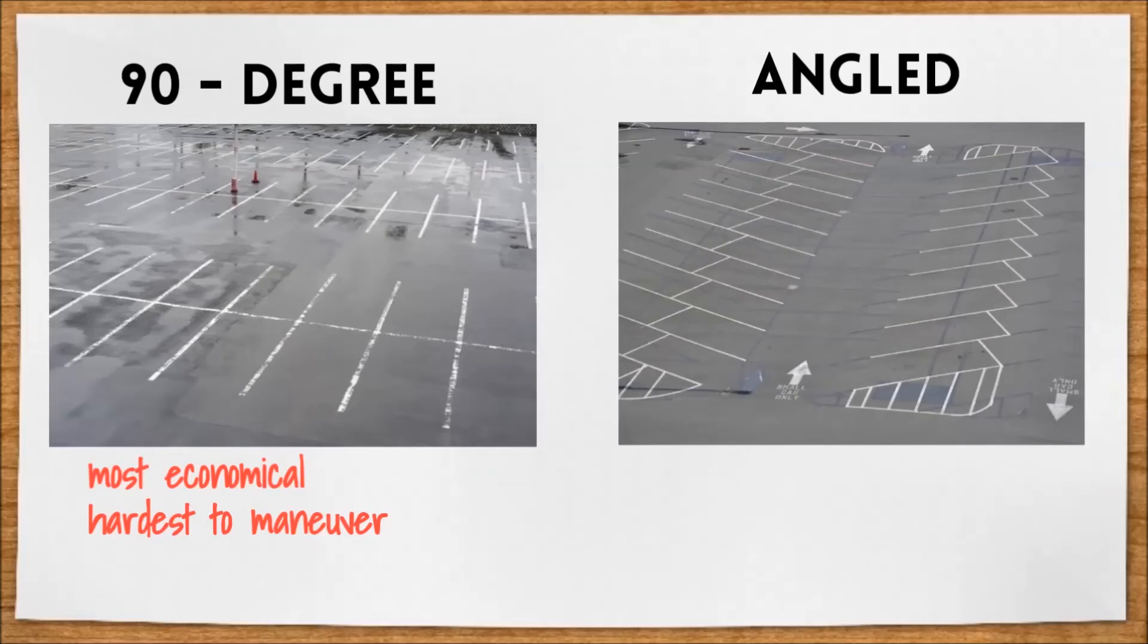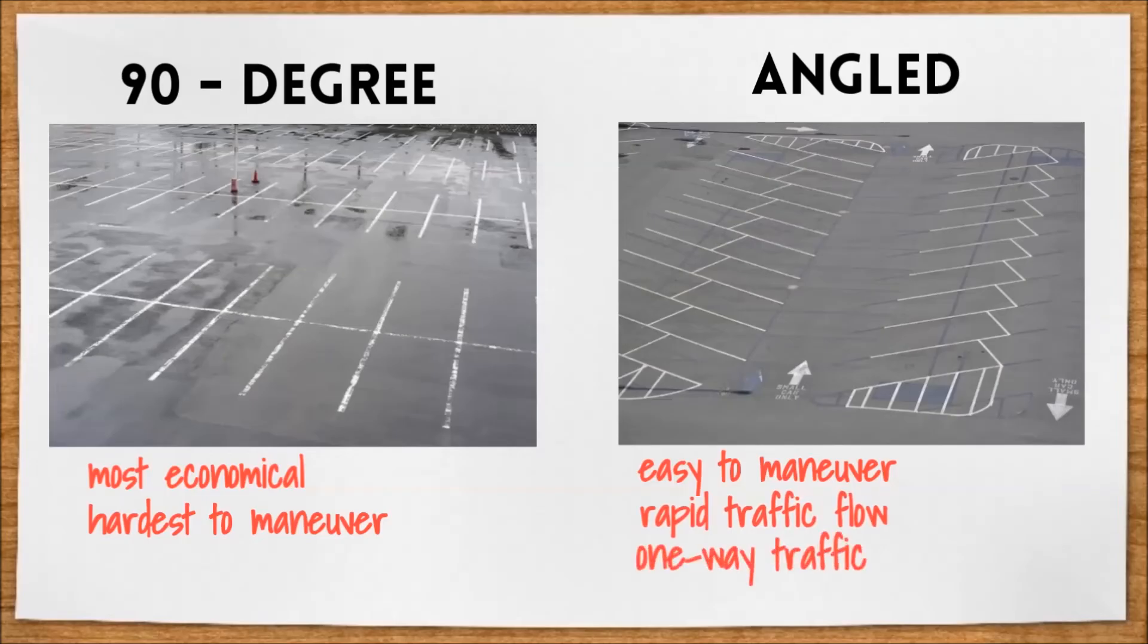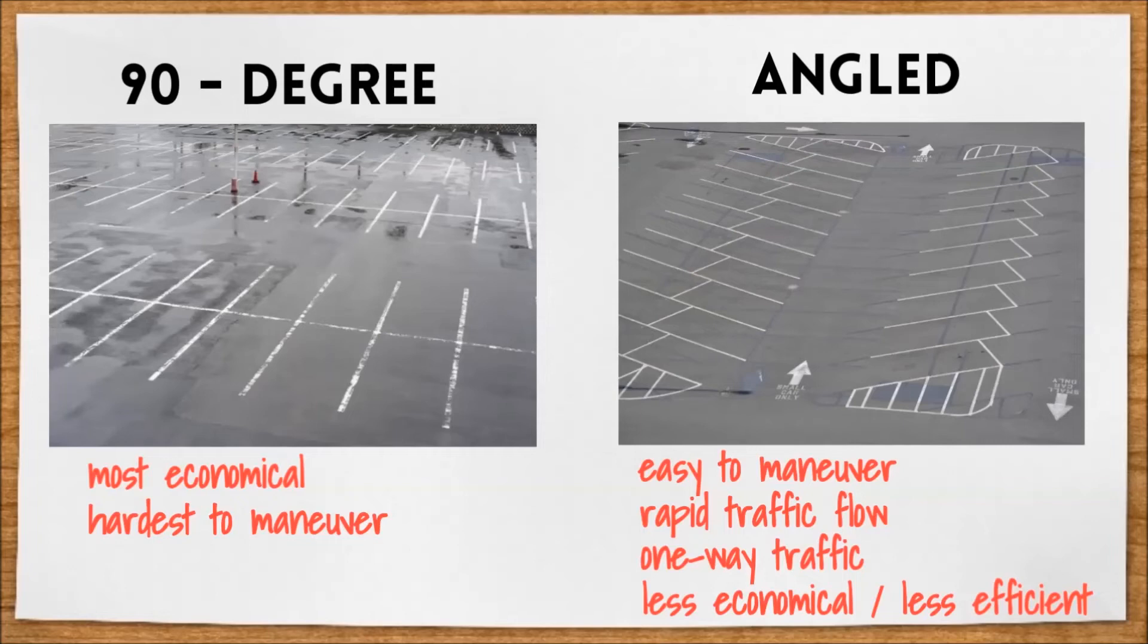Angled parking spaces are easier to maneuver and lead to the most rapid traffic flow, but they require one-way traffic and are less economical and less efficient, meaning you can fit less parking spaces than a 90 degree parking layout in the same size parking lot.